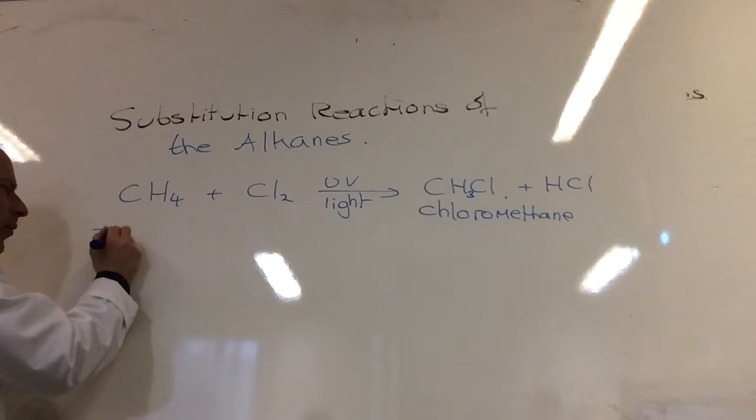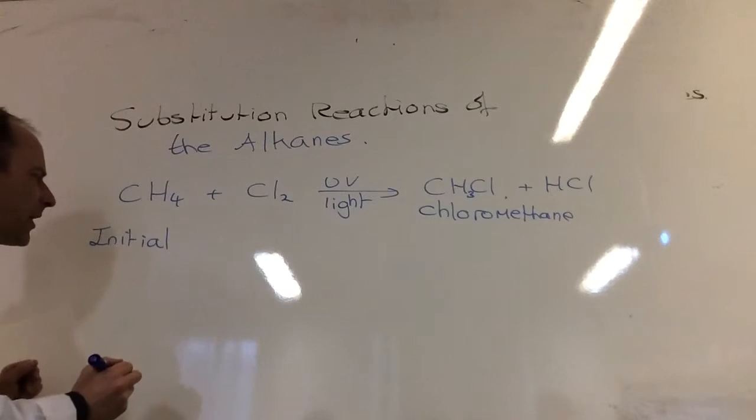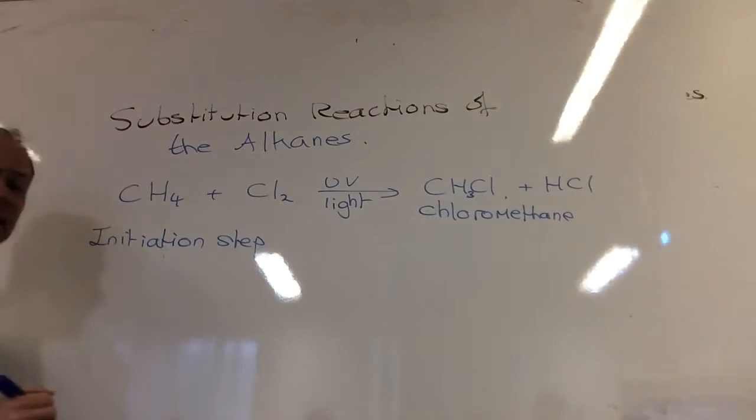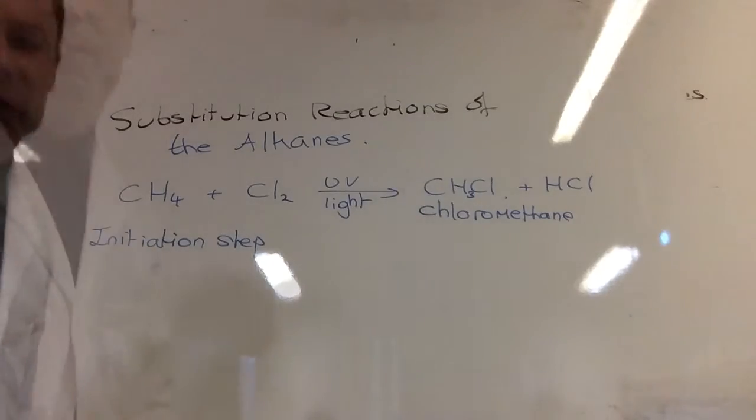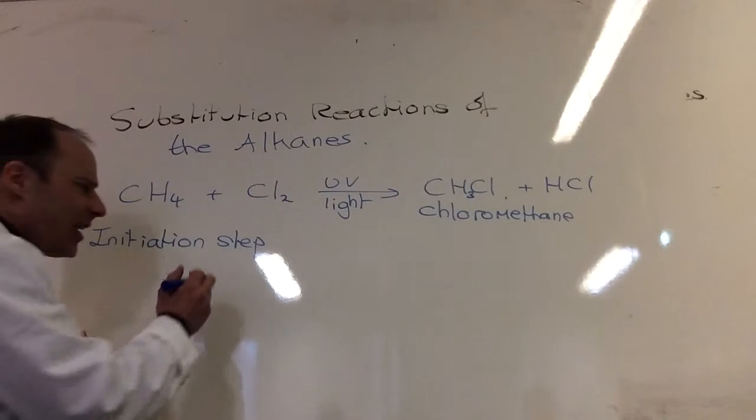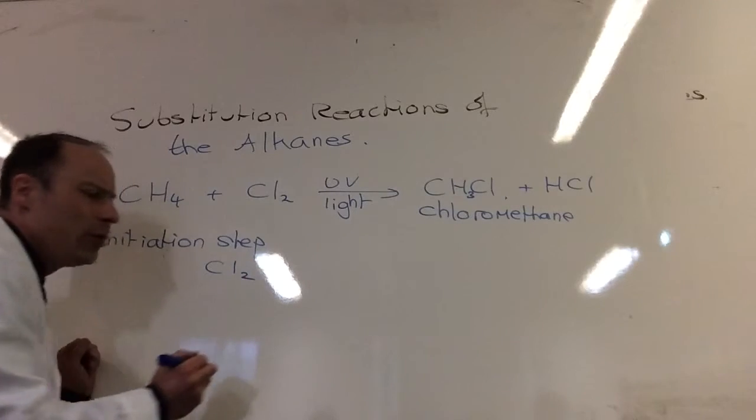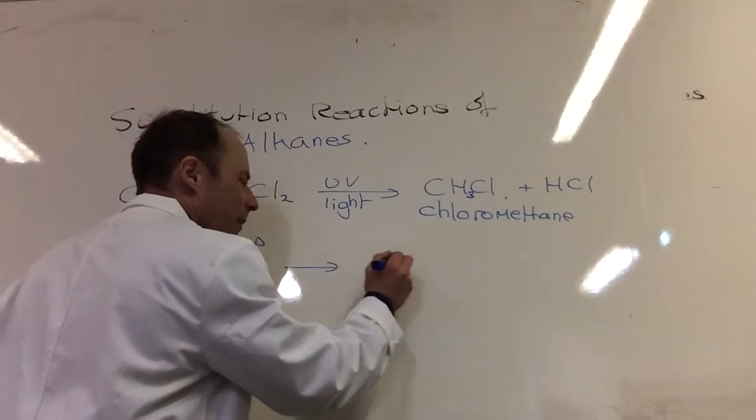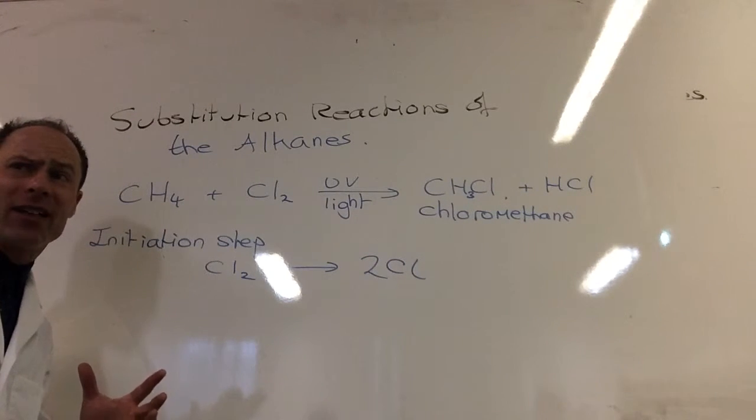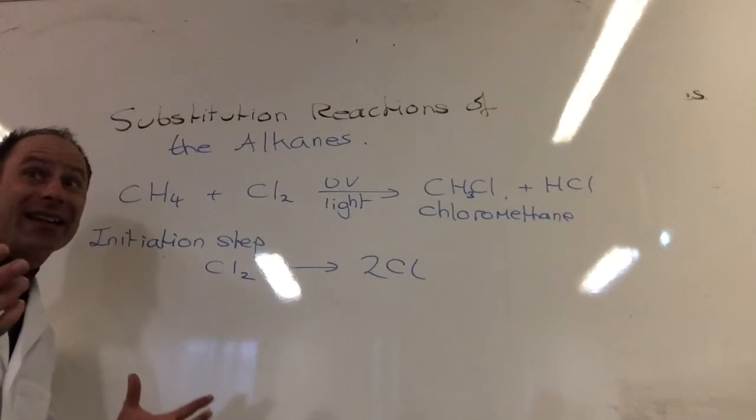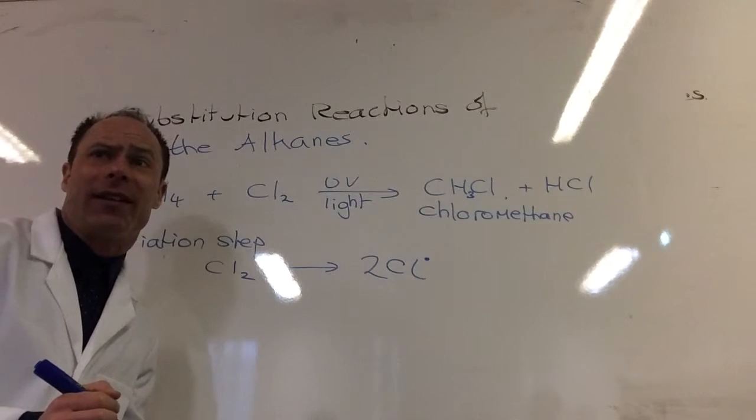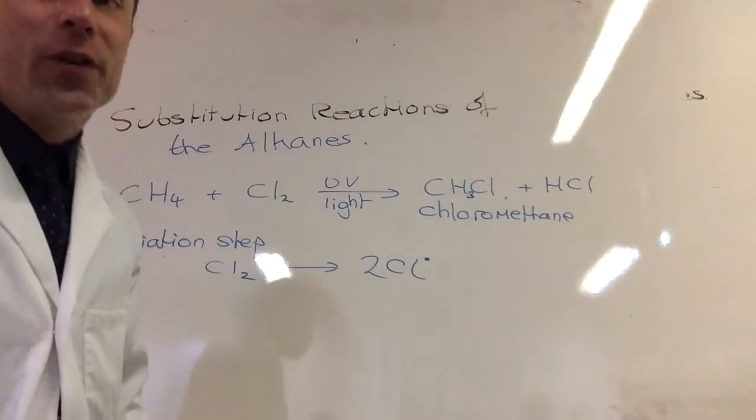The first step is an initiation step, and that's why I need UV light. The initiation step involves a Cl2 molecule splitting up to give me two chlorine atoms. Now they've got an unpaired electron - we call them free radicals. Free radicals are really reactive, they're chlorine atoms. So we represent a free radical by just putting a little dot like that. That is a free radical, it's got an unpaired electron.